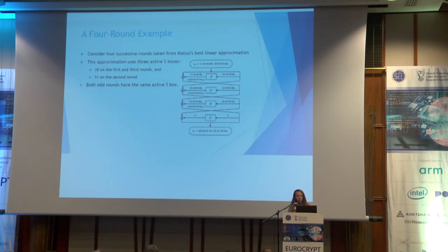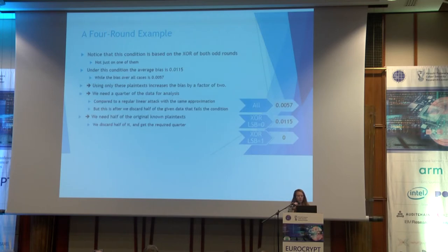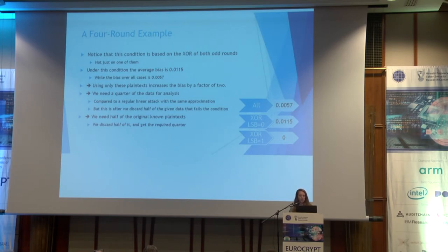In the case of four rounds, we need to use the piling-up lemma. Consider four rounds taken from Matsui's best linear approximations. In this linear approximation, all rounds have the same active S-box as found in this example. The original bias of this linear approximation is 0.0057. It decreases to zero when the XOR of the LSB is one, and it doubles the bias when the XOR of the LSB is zero.